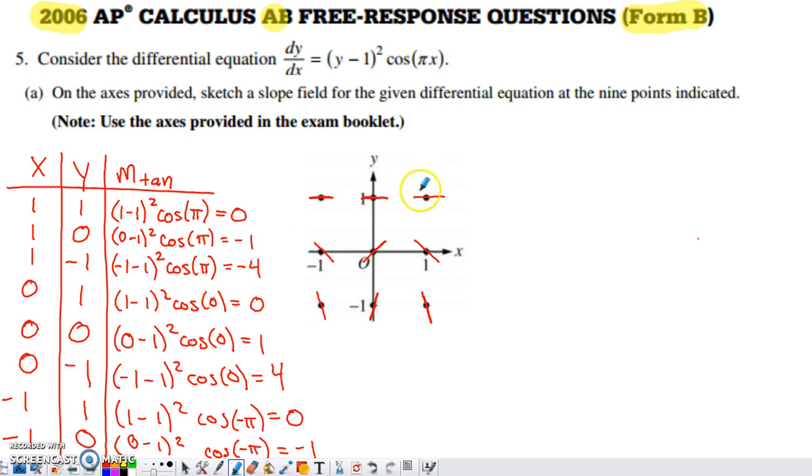In part A, they ask us to use the axes to sketch a slope field for the differential equation at the nine points indicated. The way you build a slope field is you pick an ordered pair. I started up here at 1 comma 1. I put 1 in for x, I put 1 in for y, and then I evaluated. 1 minus 1 is 0 times cosine of pi gives an answer of 0, and I just had to draw a line segment with a slope of 0 at that ordered pair.